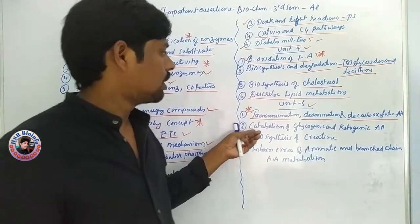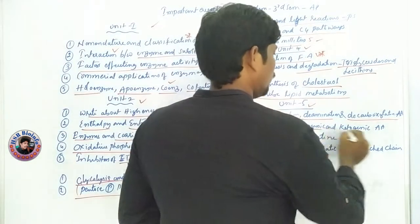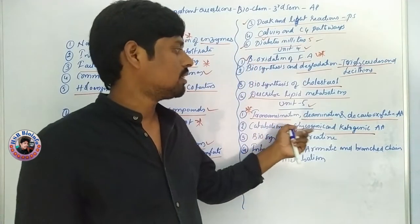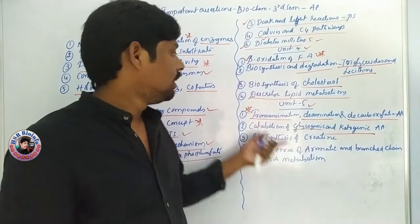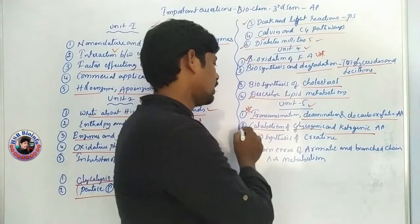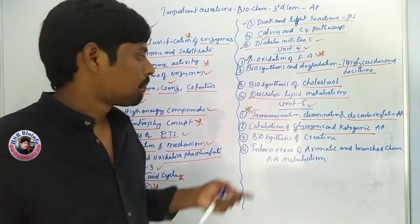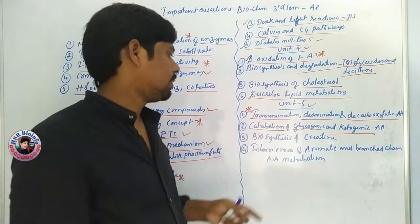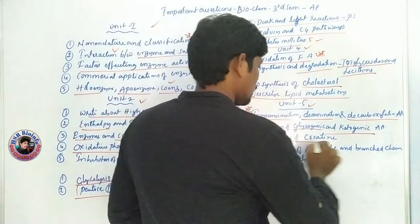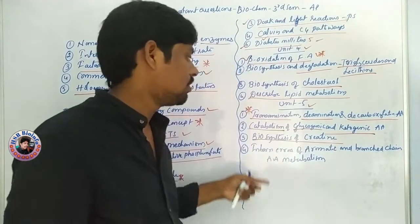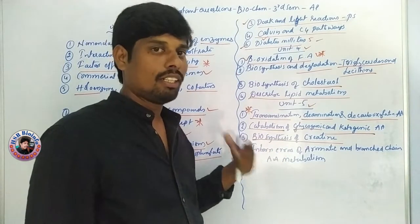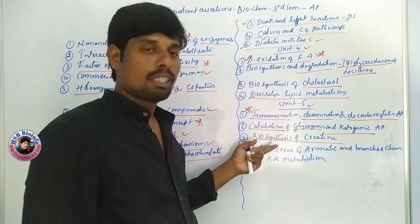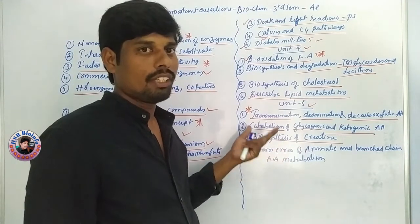Coming to the second question: catabolism of glycogenic and ketogenic amino acids. Different kinds of amino acids are glycogenic amino acids and ketogenic amino acids — this is the case of catabolism and break-down. This is the biosynthesis of creatine. Creatine synthesis involves specific substrates, products, and intermediates as part of this pathway.